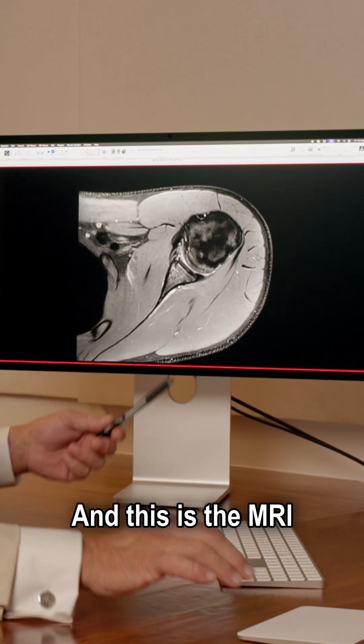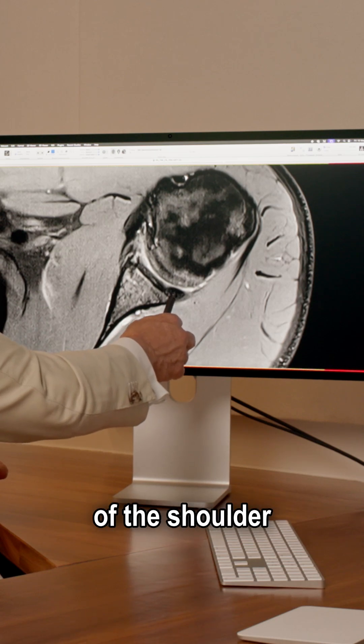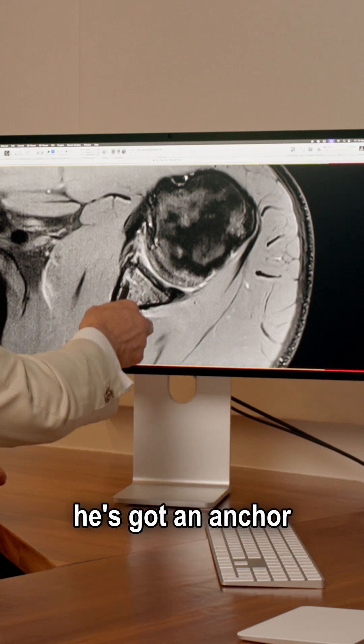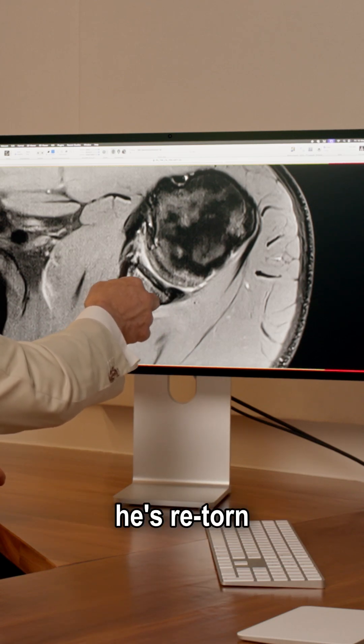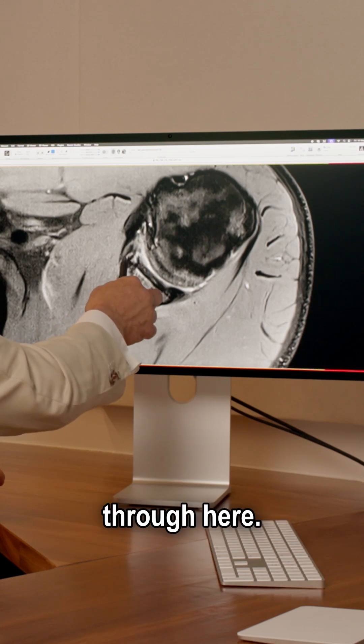This is the MRI scan now that he's come to see me with. You can see the labrum at the back of the shoulder is still intact, but at the front of the shoulder he's got an anchor point here and unfortunately he's re-torn that repair. The labrum is out through here and there's a tear line down through here.